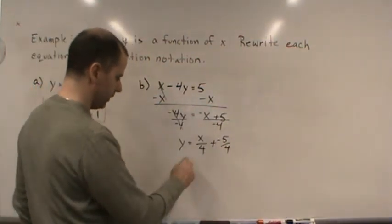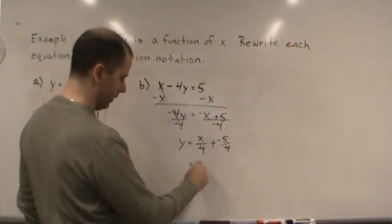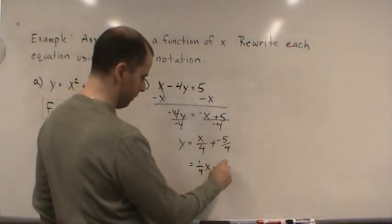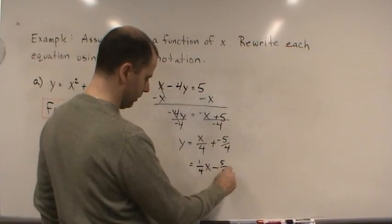So if we want to rewrite this, we could write this as 1 fourth times x minus 5 fourths.